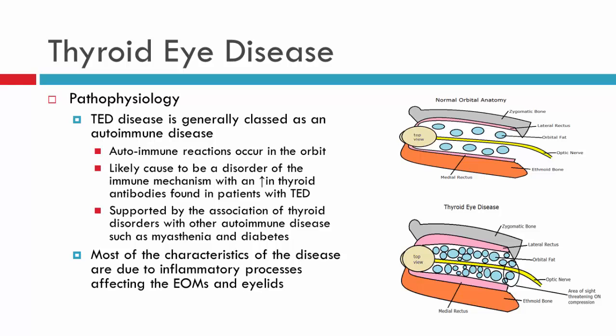Much of what we see in thyroid eye disease relates to an inflammatory process and its consequences. Two of the main findings are enlargements of the extraocular muscles and an increase in orbital volume or orbital fat. In the image here, we can see the medial rectus, the eye, the optic nerve, and blue circles indicating orbital fat. With thyroid eye disease, there is infiltration and an increase in orbital volume with more orbital fat, and also enlargement of the extraocular muscles — in this instance the medial rectus is depicted. Many of the signs and symptoms we see in patients come back to that inflammatory process.